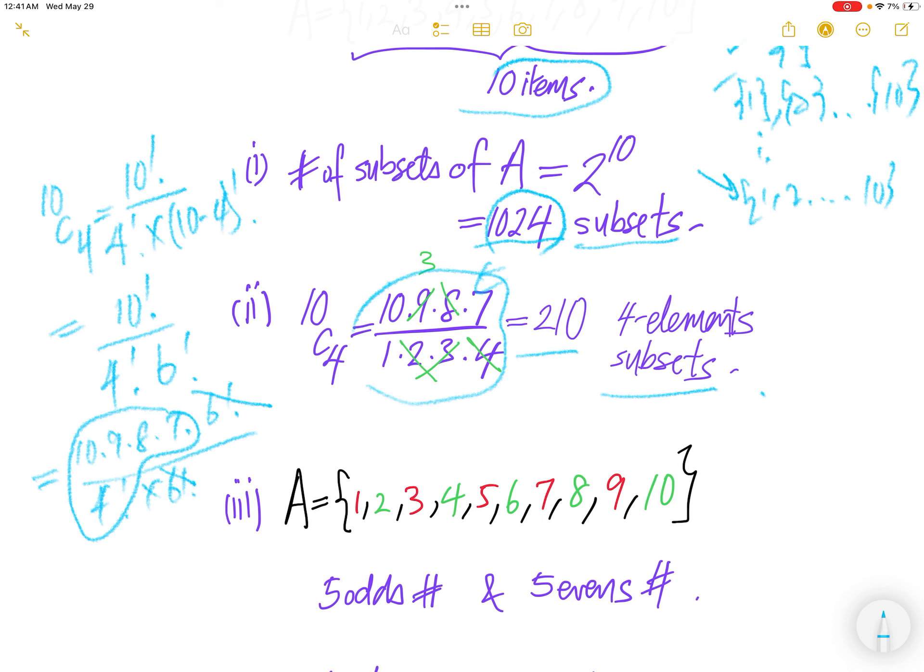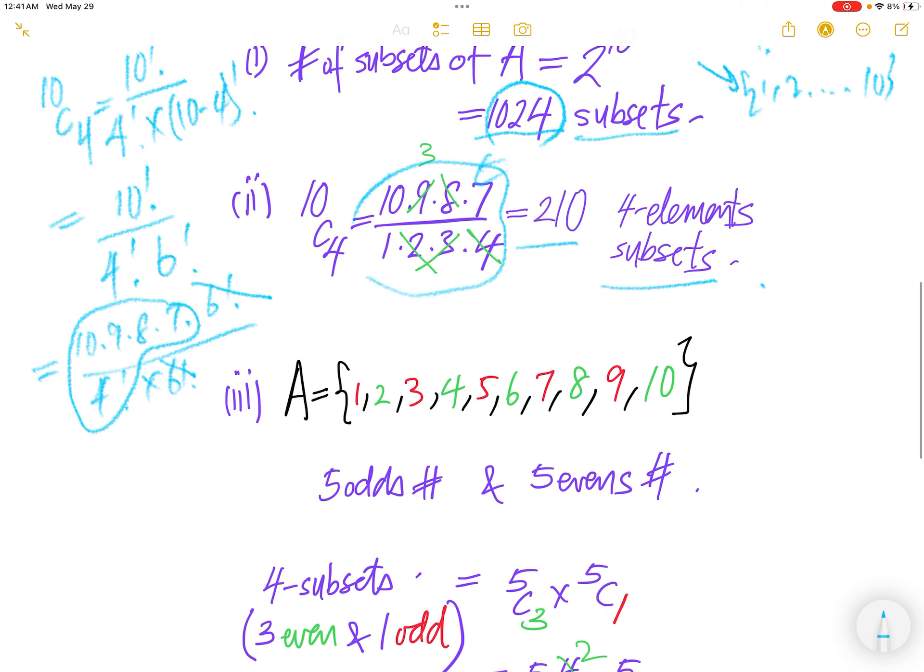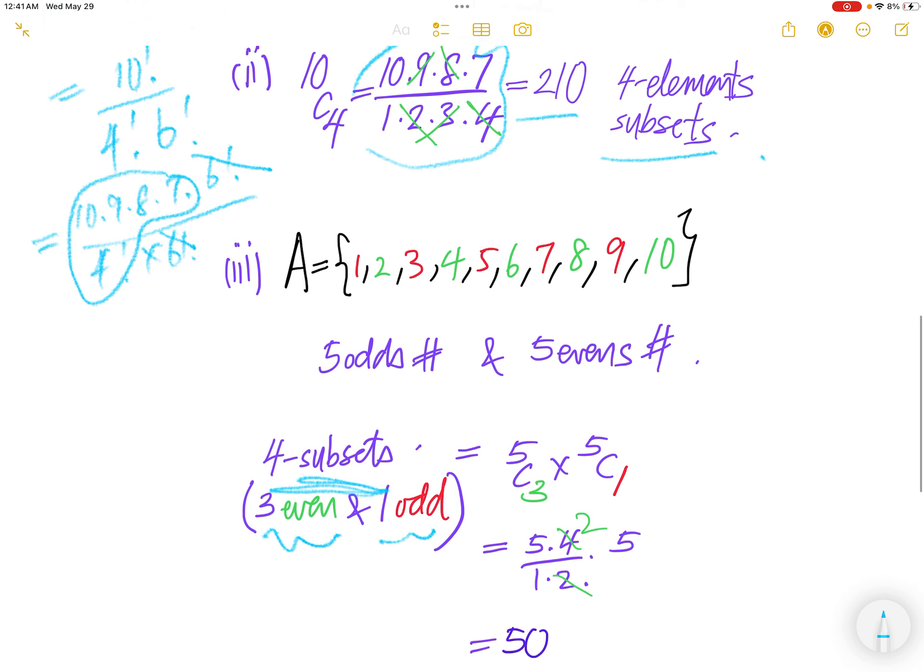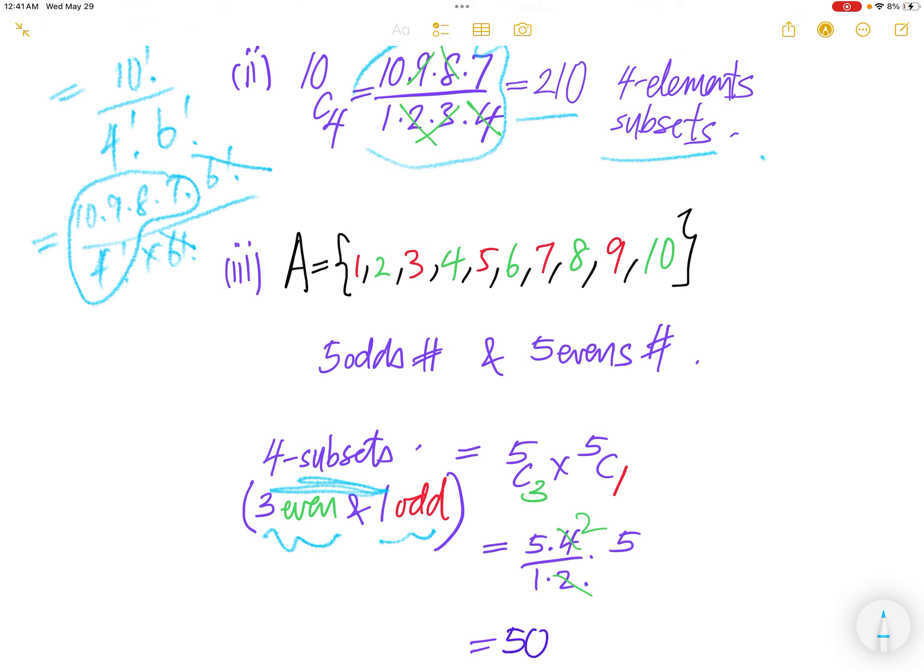Now let's go to part 3. Part 3 this time, we are going to select a subset of 4 elements again, but there is a constraint. Instead of any 4 elements, now that 4 elements need to consist of 3 even and 1 odd. Total is 4 items. How do we do that?